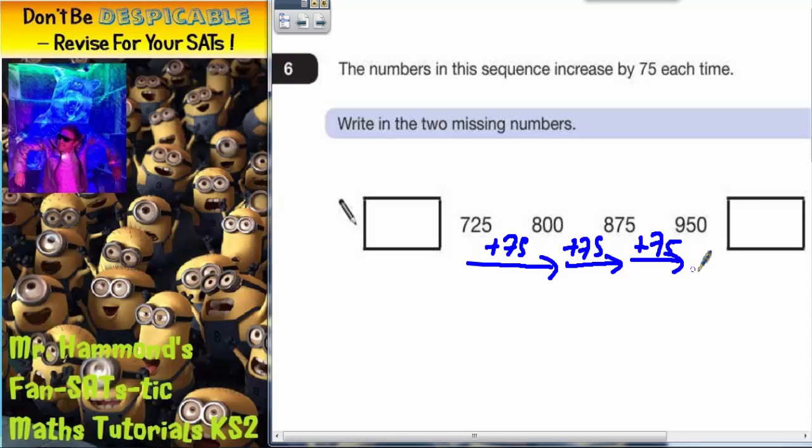So when we go forwards again, to get this missing box on the end, we've got to add on 75 to 950. Easiest way to do that, quick column method.